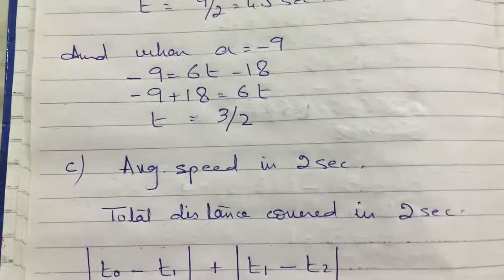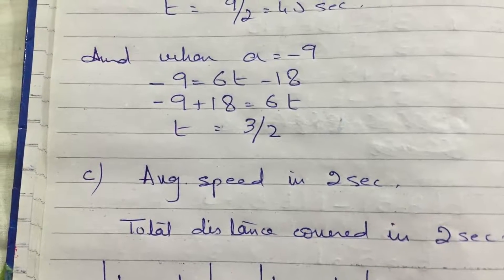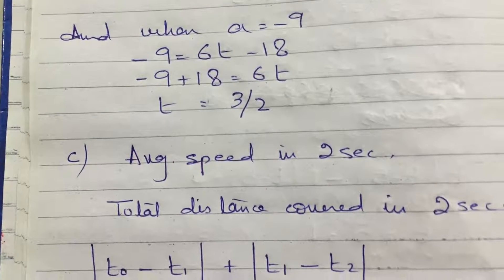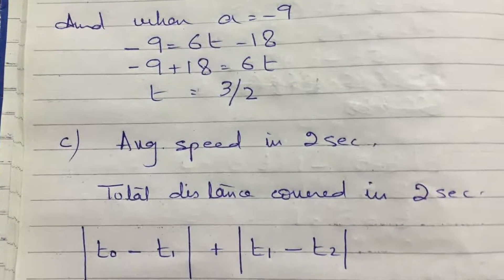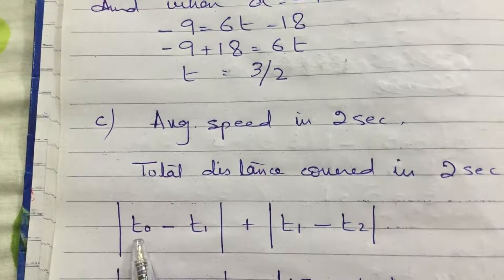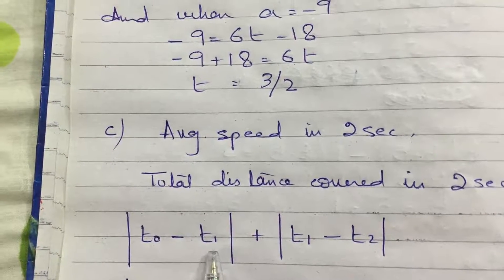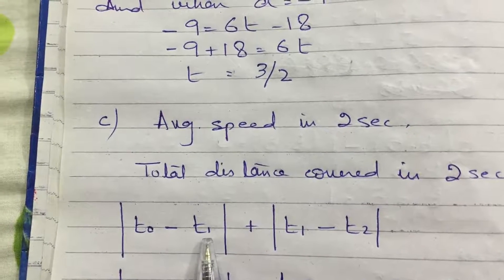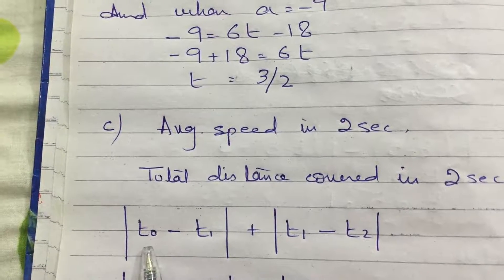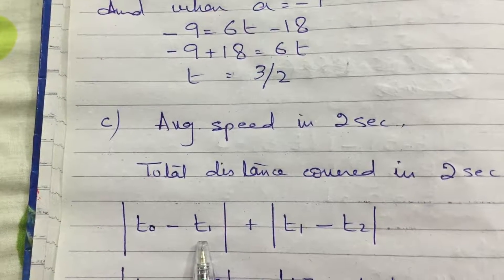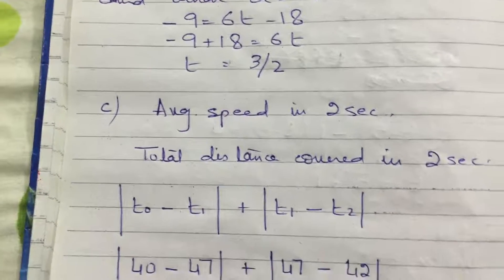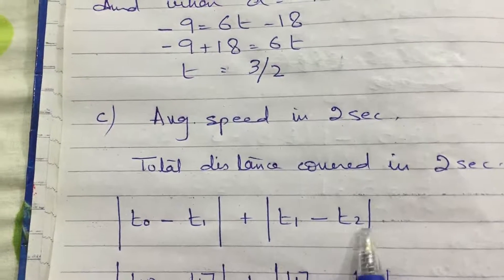In part C, I have to find the average speed over 2 seconds. From part A, velocity was instantaneously zero at t equals 1 and t equals 5 seconds, meaning at t equals 1 second the object takes a turn. So I need to calculate the distance covered from 0 seconds to 1 second, and then from 1 second to 2 seconds.